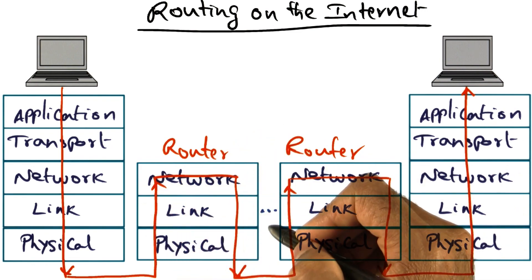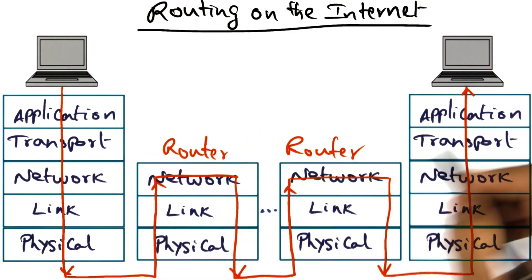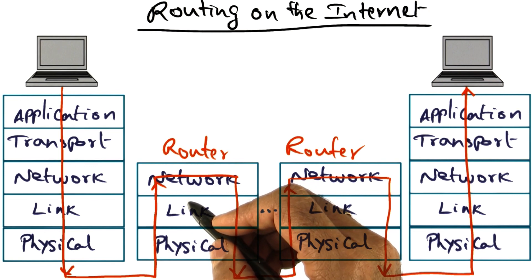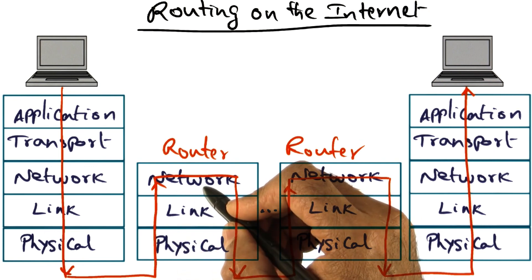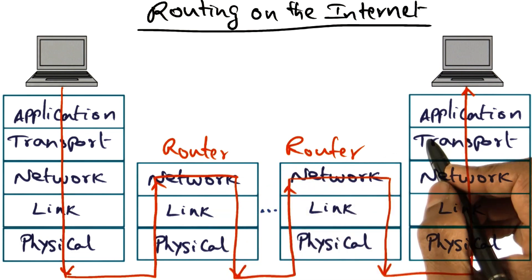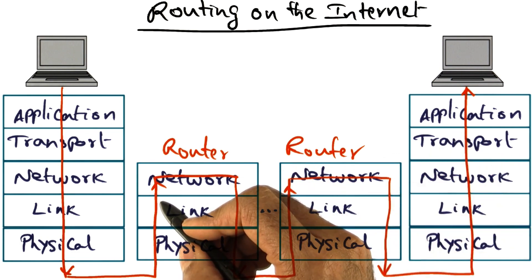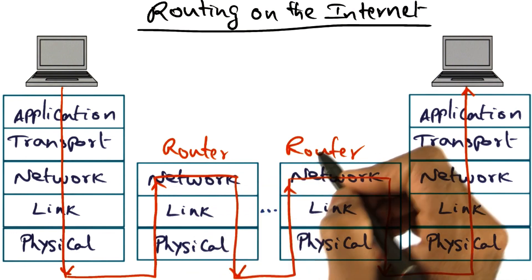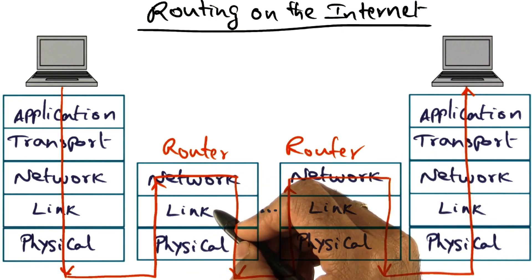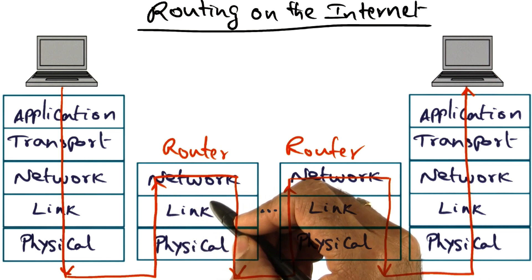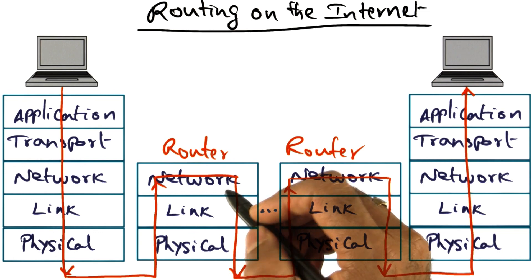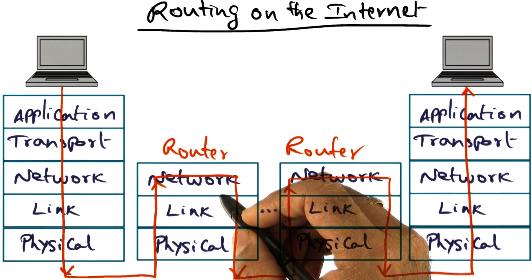The routers on the internet that are intermediate between the source and the destination don't inspect the packet for its contents or anything like that. All they're doing is, when a packet comes in, they're looking at the destination node for that packet and figuring out what is the next hop to send the packet to. Each router makes that determination by doing a table lookup — every router has a routing table that tells it, given a particular destination, what is the next hop.